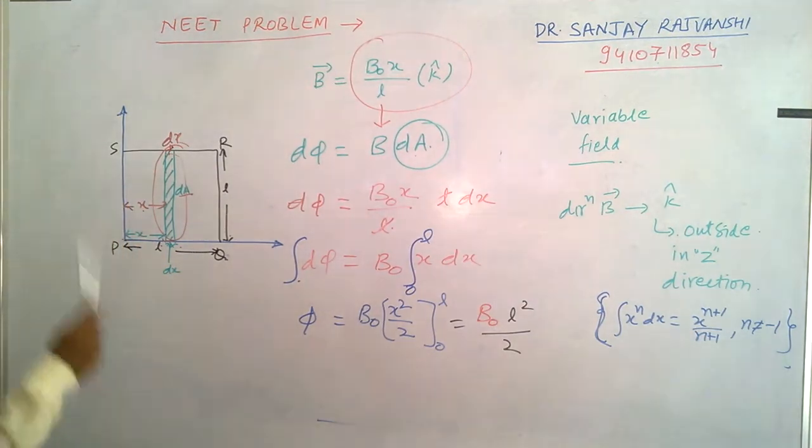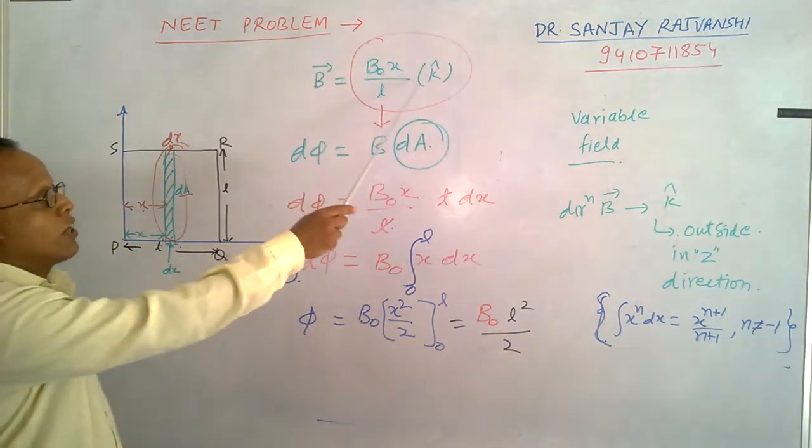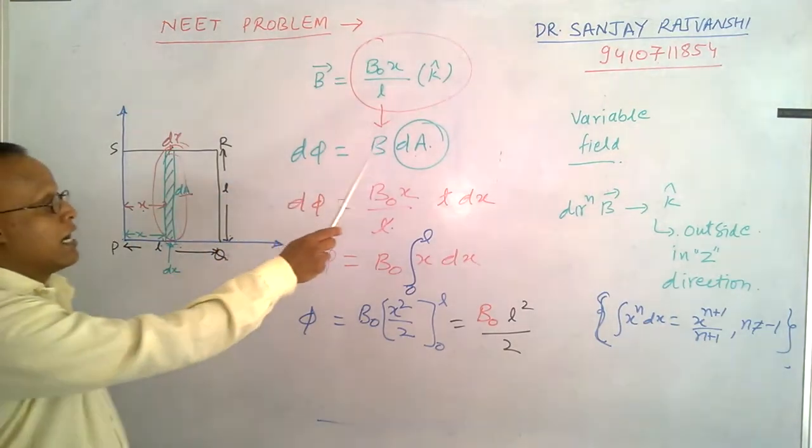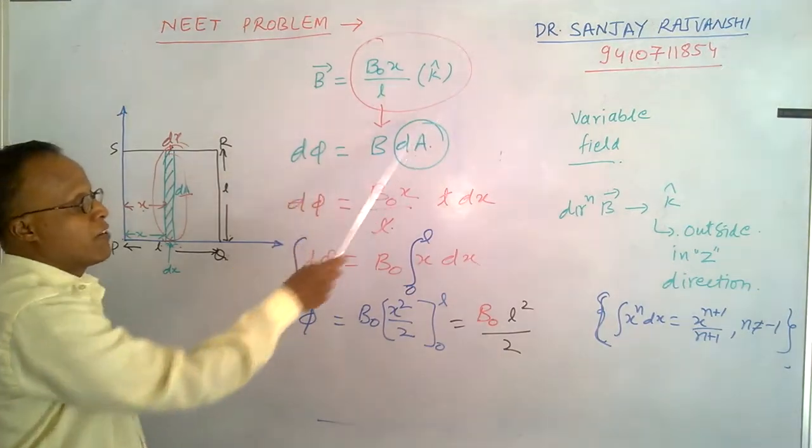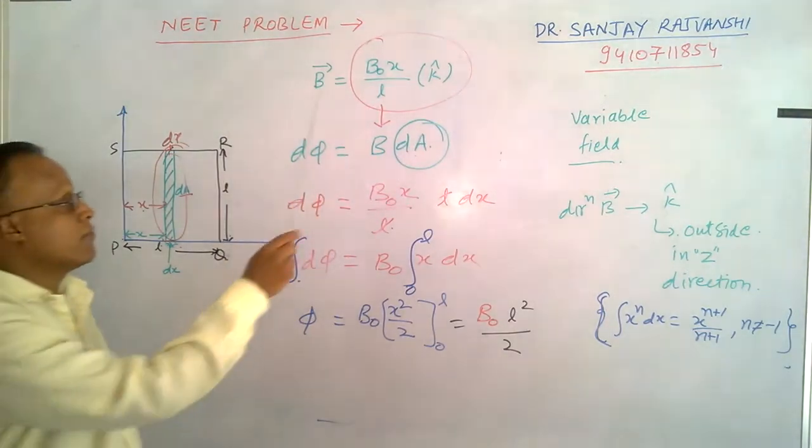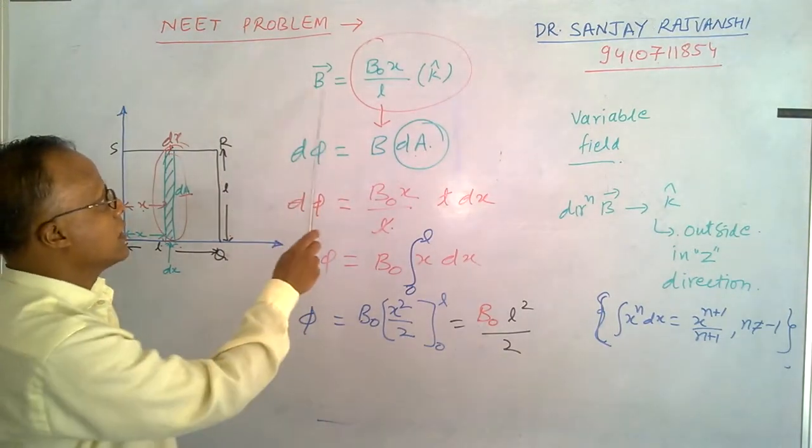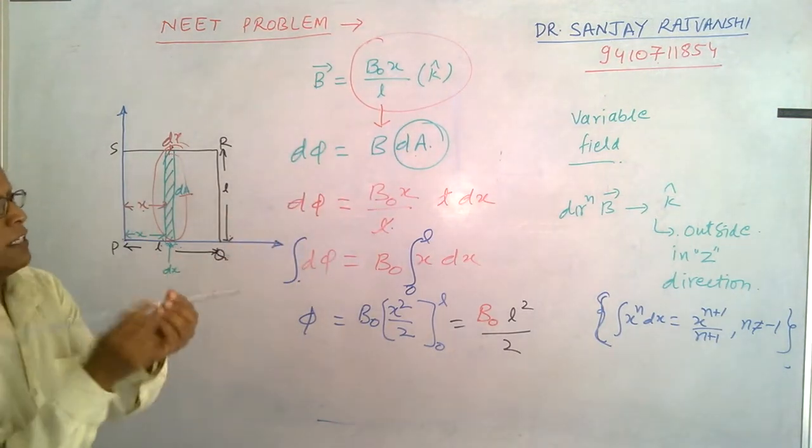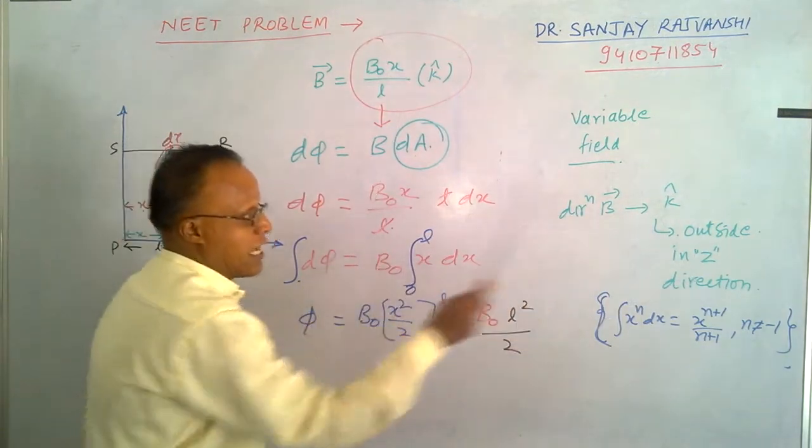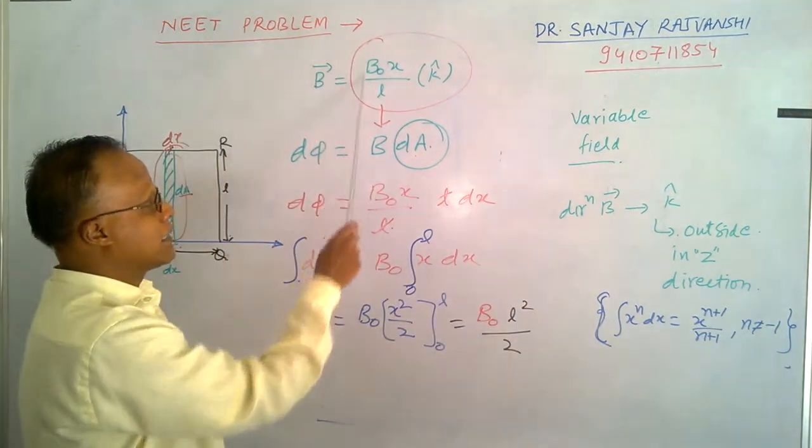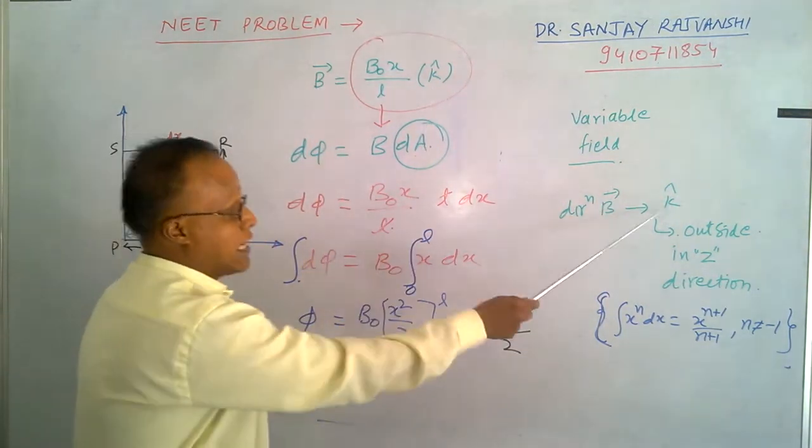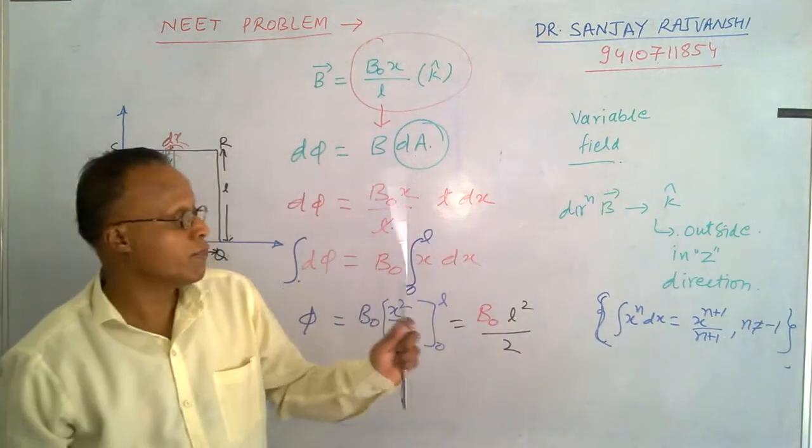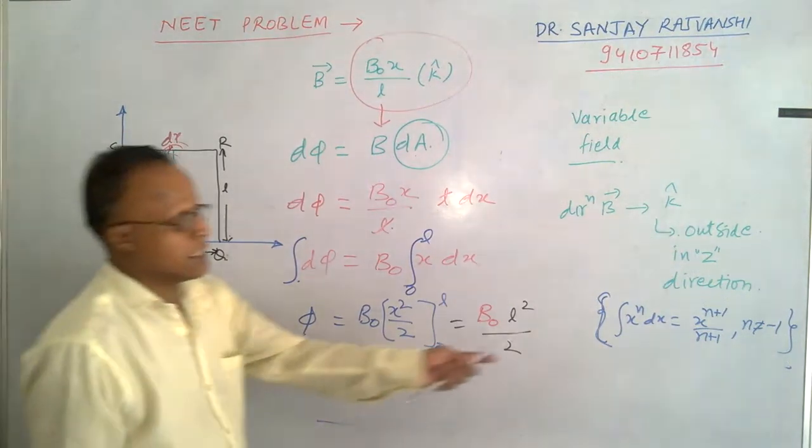This square PQRS is placed in this field, so at this time the value of field is variable, it is not constant. So we can say the field is variable. What is the direction? The direction is given as k cap, which means outside the plane and it is in z direction. The direction of magnetic field B is along k cap, it means outside the plane formed by this PQRS and it is in z direction.